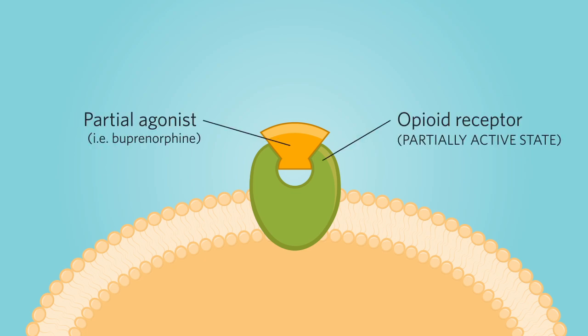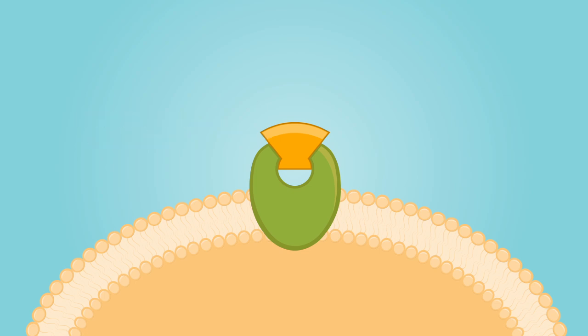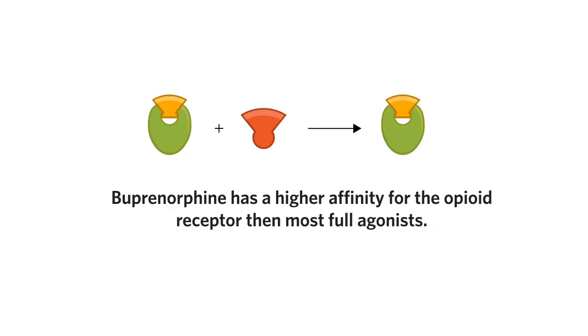When an individual is on a therapeutic dose of buprenorphine, it provides relative protection against overdose. You can visualize this as most of the opiate receptors in their brain being occupied by buprenorphine. If an individual uses a full opiate agonist, such as heroin, on top of their buprenorphine, the euphoria and the effects of the full opiate agonist, including respiratory depression, are blocked as buprenorphine has a higher affinity to the opiate receptor. This provides relative protection against overdose.